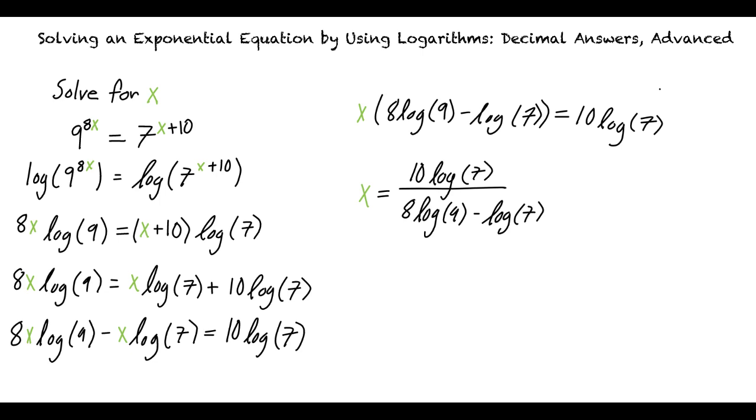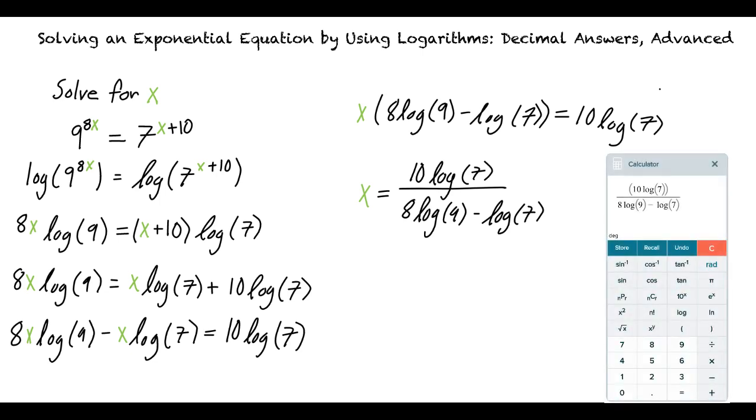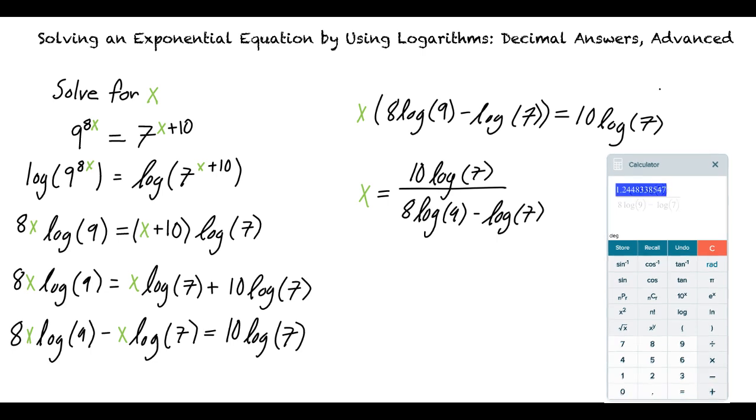Wait, but don't we want a decimal number for our answer? That's right. Entering 10 log 7 divided by 8 log 9 minus log 7 into the calculator, we will get that x is approximately equal to 1.2448.